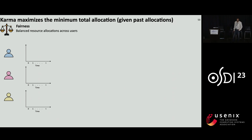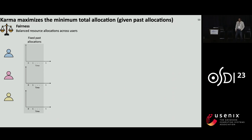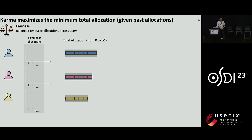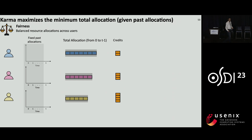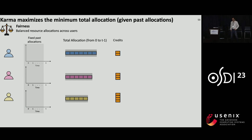Regarding the fairness guarantee: given fixed past allocations from time 0 to T-1, the user who has received the least total allocation will have the maximum number of credits. Because Karma prioritizes allocation to borrowers with more credits, it tries to increase the allocation of this worse-off user as much as possible. Based on this intuition, we prove that Karma maximizes the minimum total allocation from 0 to T-1 given fixed past allocations.